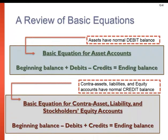As a refresher, assets have a normal debit balance. So the beginning balance plus all increases to that account less the decreases which are credits will give us the ending balance for assets. For contra assets, liabilities, and equity accounts, they have a normal credit balance. So the beginning balance less debits plus credits equals the ending balance. You may prefer to work with a T-account to track increases and decreases, but these are the general premises of the equations we're going to work with.